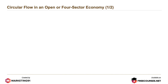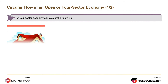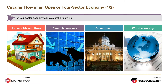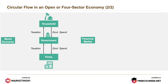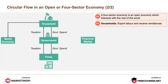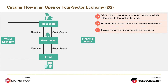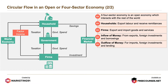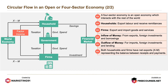In a circular flow in an open or four-sector economy, the economy consists of: households and firms, financial markets, government, and the world economy. A four-sector economy is an open economy which interacts with the rest of the world. Households export labour and receive remittances. Firms export and import goods and services. Inflow of money comes from exports, foreign investments, and borrowings. Outflow of money is for imports, foreign investments, and lending. Both households and firms have net exports — X minus M — representing the balance between receipts and payments.